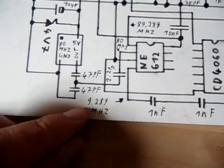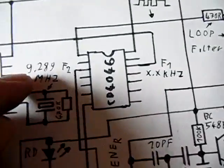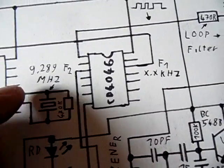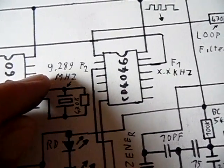And if you see this frequency, 9.289, you will also see this frequency of our crystal. See, we have two equal frequencies.